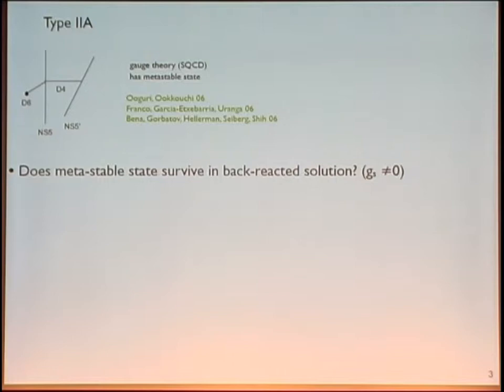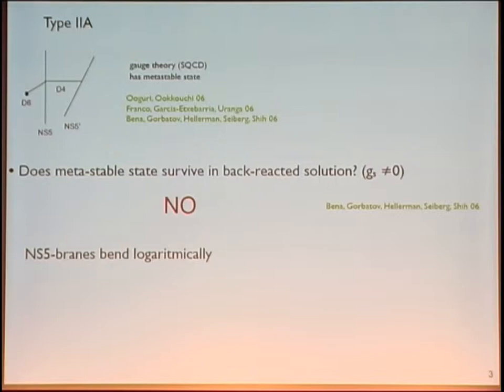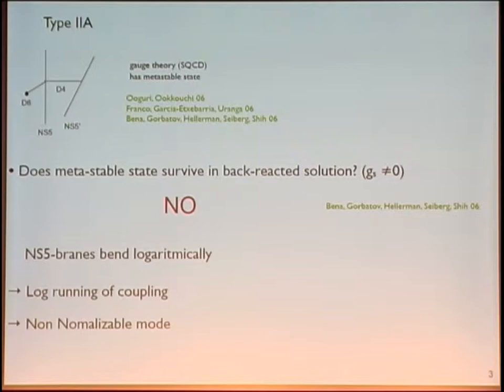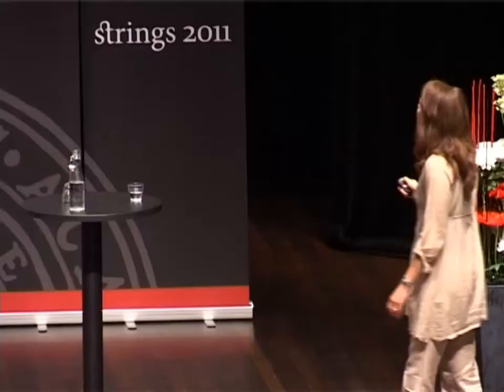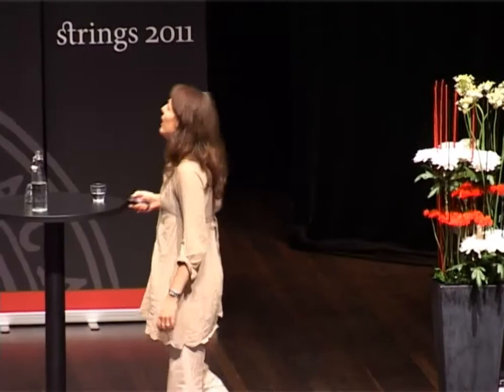The question is: does this metastable state survive in the backreactive solution? Bena, Polchinski, Roiban, and Shih showed that it doesn't. What happens is that the NS5 brane bends logarithmically with respect to the supersymmetric solution. This means there is a logarithmic running of the coupling constant, and this is a non-normalizable mode. For a given operator of dimension delta, there are two modes in the supergravity solution — one non-normalizable and one normalizable. The non-normalizable one corresponds to adding an operator to the Lagrangian, while the normalizable one corresponds to adding a vacuum expectation value. So if there is a non-normalizable mode, the Lagrangian is not the same — it is a state in a different theory, and the theory itself is supersymmetry breaking.